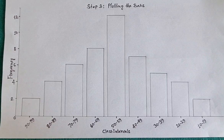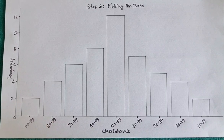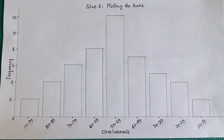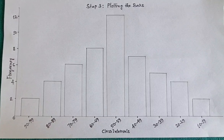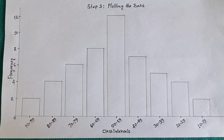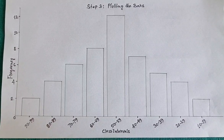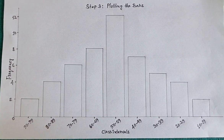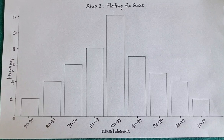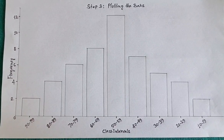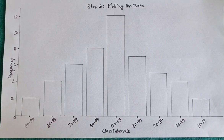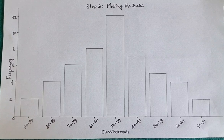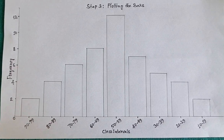Similarly, we plot bars for all intervals: 70 to 79 at 6, 60 to 69 at 8, 50 to 59 — the tallest bar at 12, then 40 to 49 at 7, 30 to 39 at 5, 20 to 29 at 4, and finally 10 to 19 at 2.